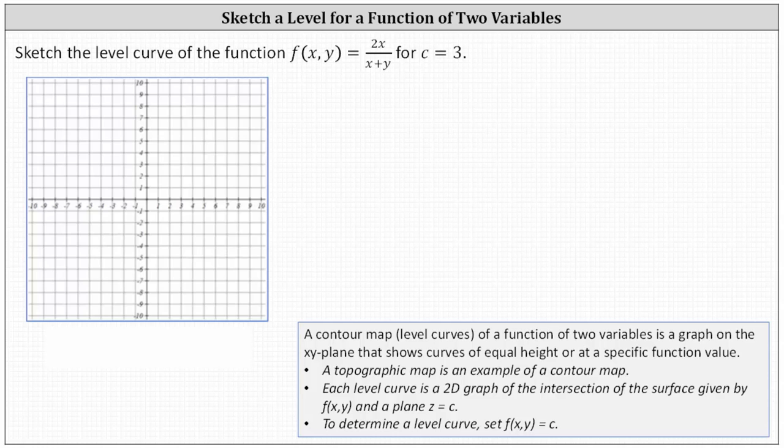Sketch the level curve of the function f of x comma y equals 2x divided by the sum of x and y for c equals 3.